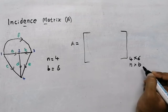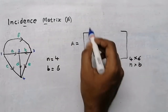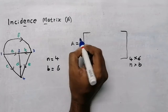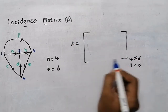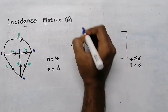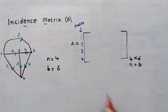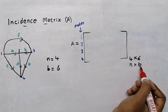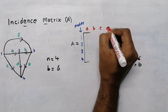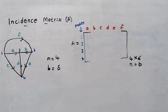For a matrix there will be rows and columns. Rows are denoted by nodes, so with four nodes we have four rows. Columns are decided by the number of branches — branches a, b, c, d, e, and f — so there are six columns.